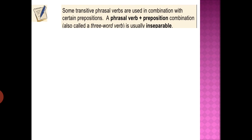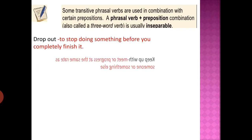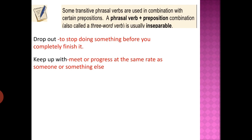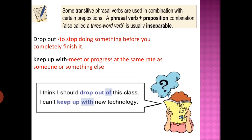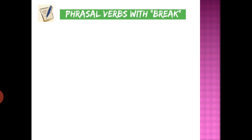Some transitive phrasal verbs are used in combination with another preposition, forming three-word verbs, and most of the time they are inseparable. For example, 'drop out' means to stop doing something before you completely finish it, and 'keep up with' means to meet or match someone's progress at the same rate. Examples: 'I think I should drop out of this class' and 'I can't keep up with new technology' — here 'of' and 'with' are the prepositions used after the phrasal verbs.